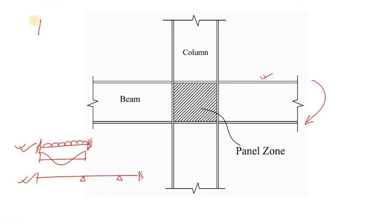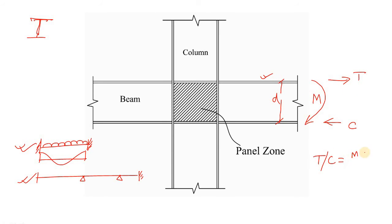In an I-section or wide-flange beam, the bending moment is simply converted into a push and pull — that is, tension and compression. If the bending moment is M and the depth between the centers of the two flanges is d, then the value of tension T or compression C is simply M divided by d. So due to this support moment M, a compressive force C and a tensile force T are applied at the flanges.